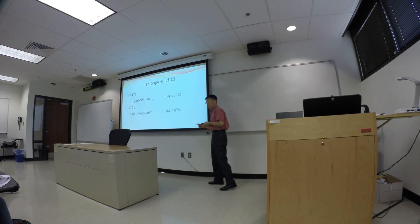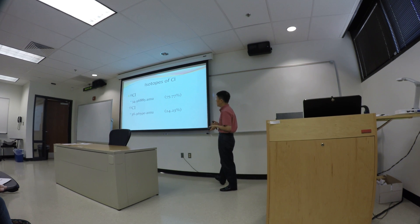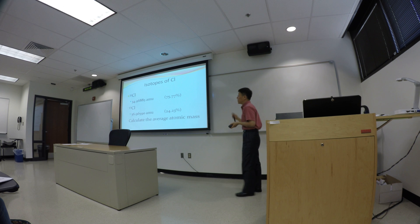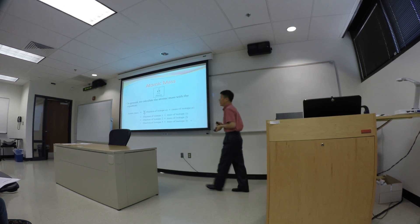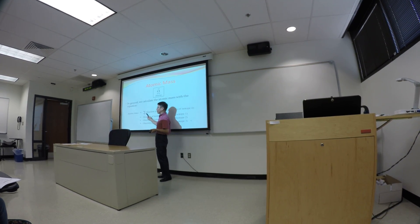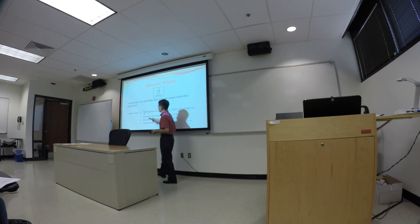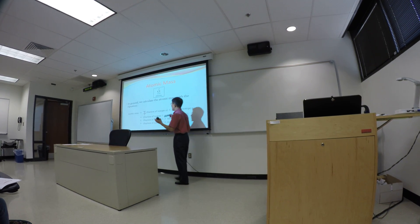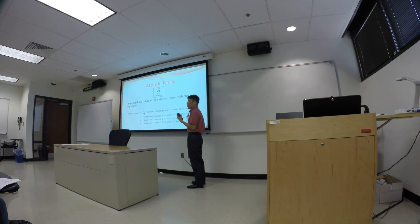To calculate the weighted average, we use an equation. Sigma represents summation in mathematics. The weighted average atomic mass equals the sum of: the fraction of each isotope multiplied by the mass of that isotope. So if you have two or three different isotopes, the fraction is the percentage expressed as a decimal.